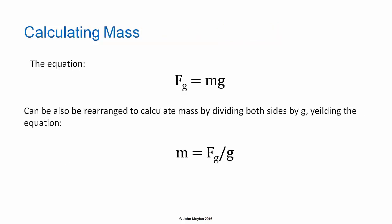Likewise, the equation F subscript g equals mg can be rearranged to calculate the mass of the object. Dividing both sides by g, we get: m equals F subscript g divided by g — mass in kilograms equals force due to gravity in newtons divided by acceleration due to gravity in meters per second squared.